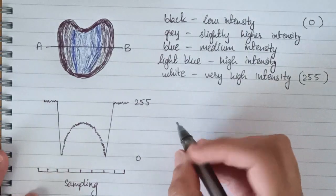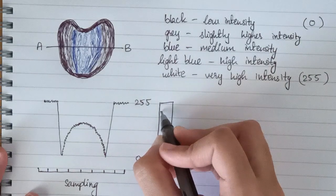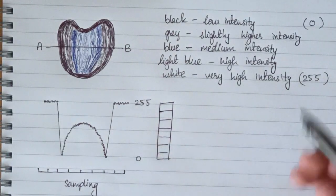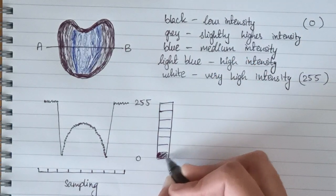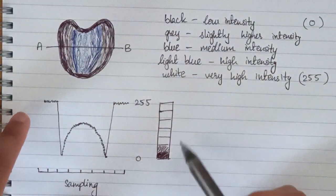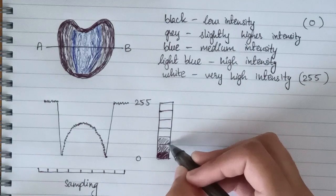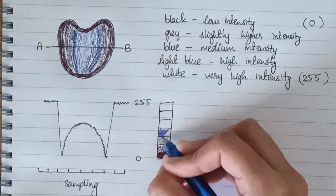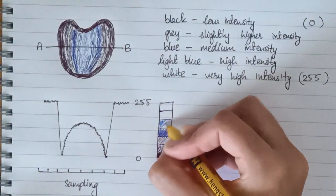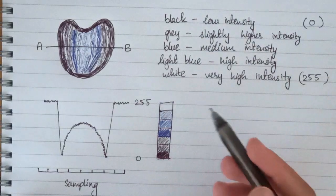Now what is quantization? What we'll do is draw a key here. Low intensity is black color so we draw black here, then it becomes gray — a slightly lighter version. Then it becomes blue, lighter blue, even lighter blue, and then white. This process is known as quantization.